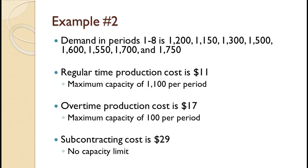In this example for you to try, demand for periods 1 through 8 is 1,200; 1,150; 1,300; 1,500; 1,600; 1,550; 1,700; and 1,750, for a total of 11,750. Regular time production costs are $11 and maximum capacity in any period is 1,100. Overtime production cost is $17 with a capacity of 100 per period. Subcontracting cost is $29 with no limit. Prepare an aggregate plan.